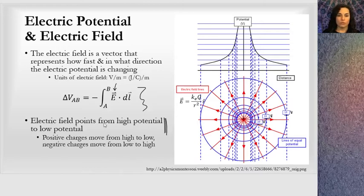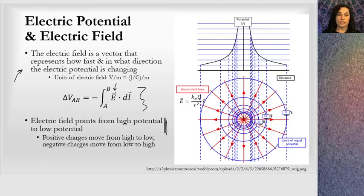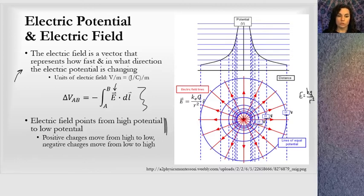Electric field lines always point from high to low potential. The electric field is a vector that represents how fast and in what direction the electric potential is changing. The electric potential is becoming less in the direction of the field line, becoming smaller in the direction of the electric field. The electric field for a point charge is kq over r squared, so it's going to be really large close to the charge, and we can see that the potential lines are close together near the charge.